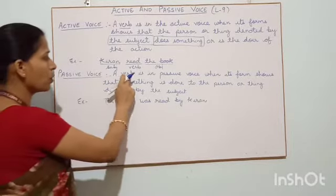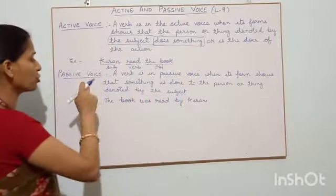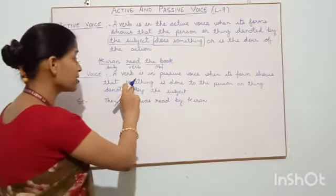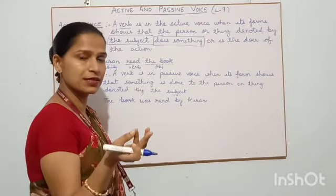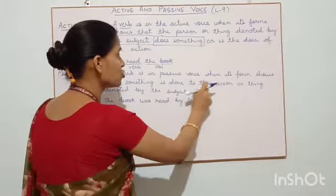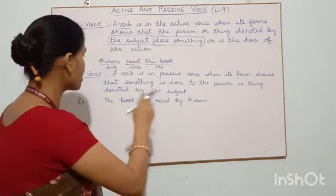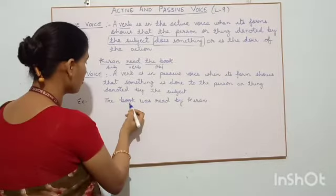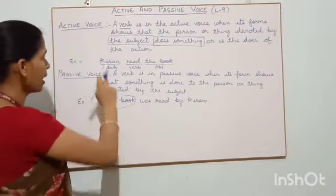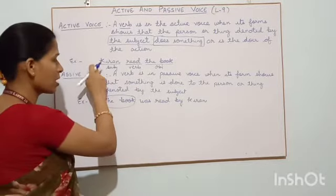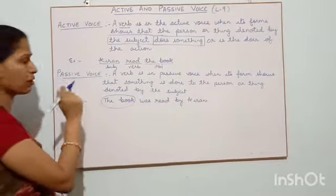Now let's come to the definition of passive voice. A verb is in the passive voice when its form shows that something is done — it is not doing anything, but something is done to the person or thing denoted by the subject. It can be a person or a thing. Here, the action is not performed by whatever is in the position of subject. I have taken one example: 'The book was read by Kiran.' And 'Kiran read the book' is in active voice. I have transformed it into passive voice.